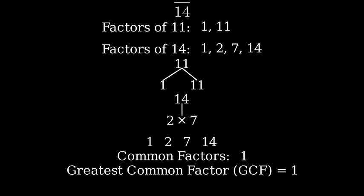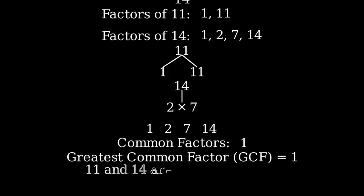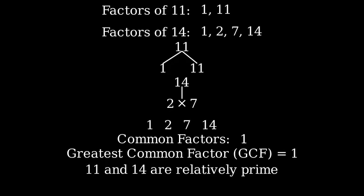When the greatest common factor is 1, this means the fraction is already in its simplest form. We say that 11 and 14 are relatively prime numbers, which means they have no common factors other than 1.